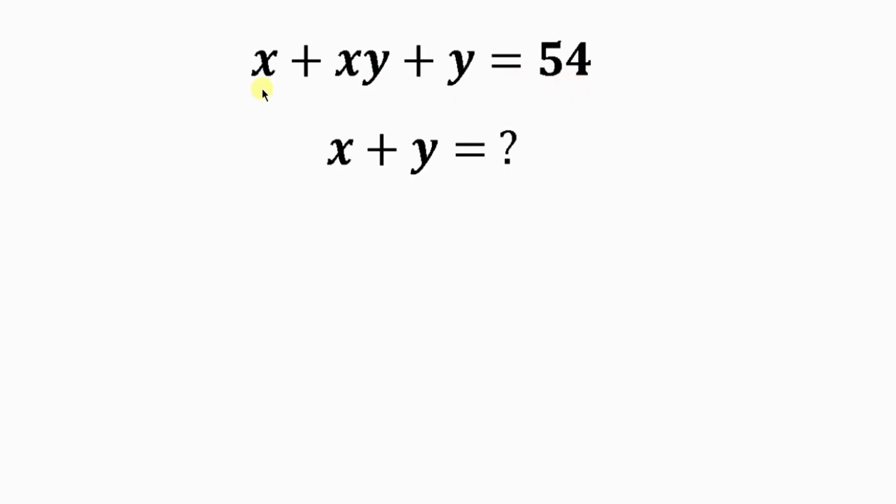Notice that on the left hand side, the first two terms, x is common. So we can factor out x. Factor out x, open brackets, x divided by x is 1 plus xy divided by x is y, and then close brackets plus y equals 54.